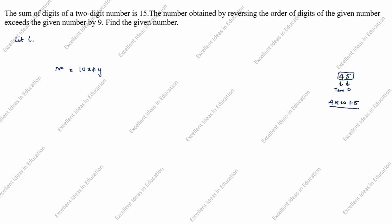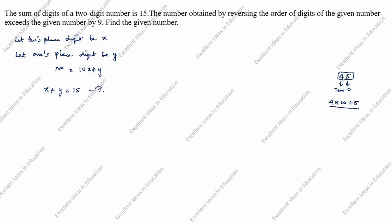Let the tens place digit be x and the ones place digit be y. What is given in this question? The sum of digits of the two-digit number is 15. So x plus y equals 15. This is the first equation.